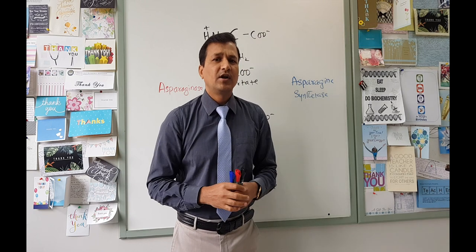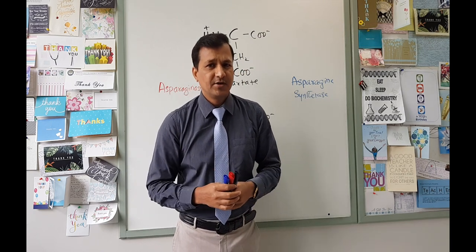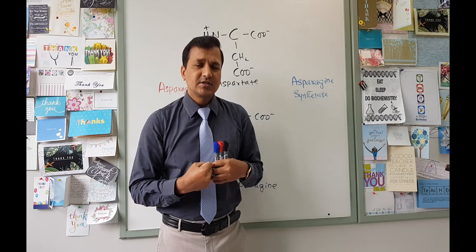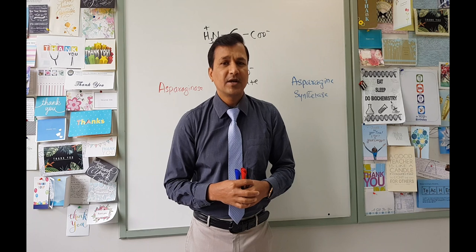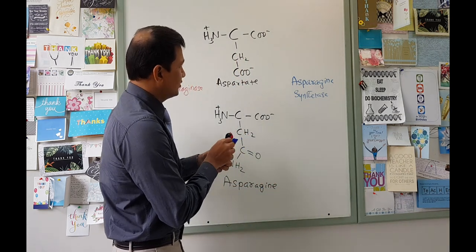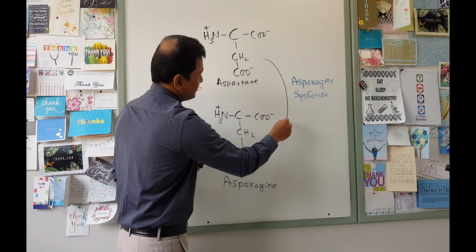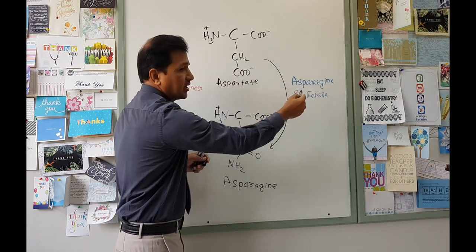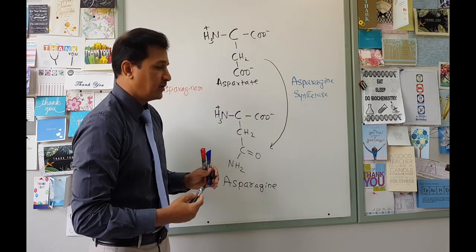We have an amino acid called aspartate, which is one of the non-essential amino acids. This aspartate, in our cells, can be converted into another non-essential amino acid called asparagine. Aspartate is converted into asparagine by an enzyme called asparagine synthetase. So this is the enzyme here — asparagine synthetase — converting aspartate into asparagine.